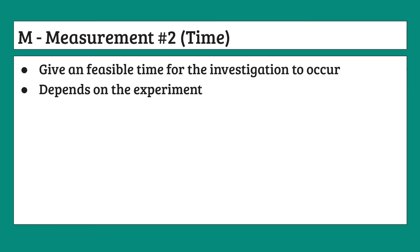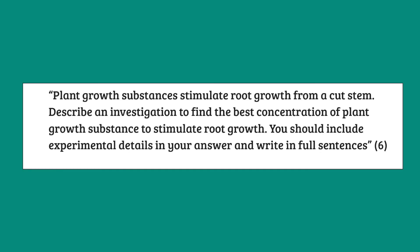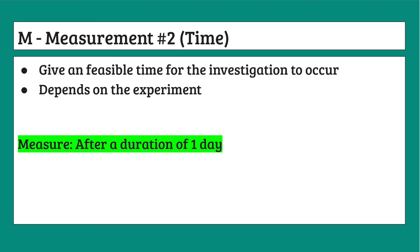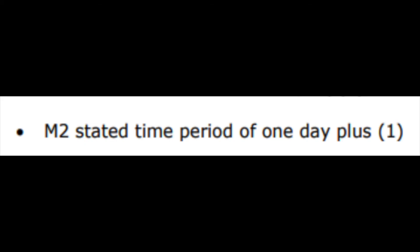For the second M, it is another measurement, but far easier to write about. The second measurement concerns the time duration of the experiment — we need to give a suitable time for the investigation to be carried out. We need enough time for the roots to actually grow, so something like 30 minutes is far too little. A more reasonable choice would be a time period of one day, which would allow enough time for the roots to grow and give us actual data. In mark schemes, the accepted range for time duration is usually quite large, so as long as you list something realistic, you should be fine.